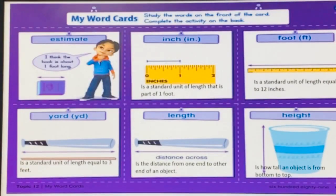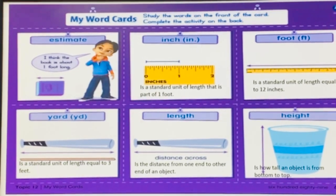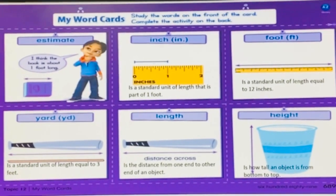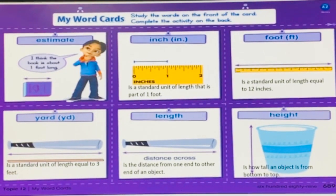Let's have a look at some of the vocabulary words which we are going to use in this lesson. The first word you can see is Estimate, which is also the name of the lesson. Now what is Estimate? Estimate is guess, or as it is written, I think the book is about one foot long.